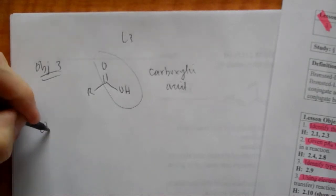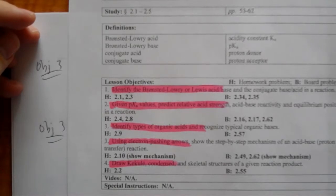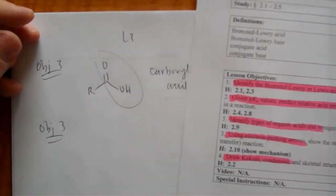Then the next objective, number 3, was to use electron pushing arrows, show the step-by-step mechanism for an acid base.